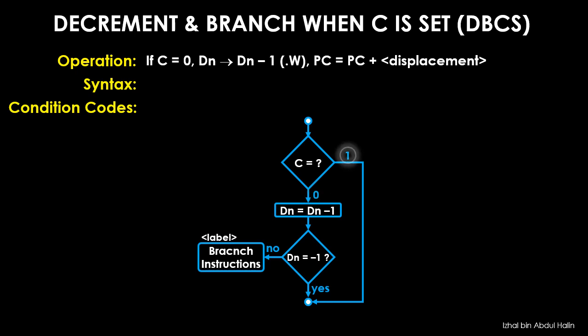The general syntax is DBCS DN comma label. The condition code checked for branching is only the C flag.